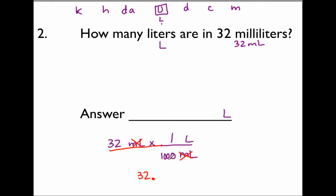Multiplying by 1 means I don't do anything. Now I look at the denominator — since the power of 10 is in the denominator, I'm going to move the decimal point to the left. Dividing by 1,000, I move three places to the left. Once, twice, three times. The new home for the decimal point is there, and since there are no whole units, I put a zero in front. The answer is 0.032 liters.